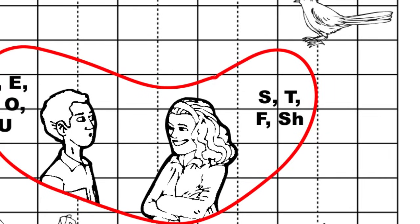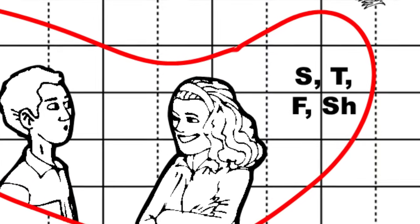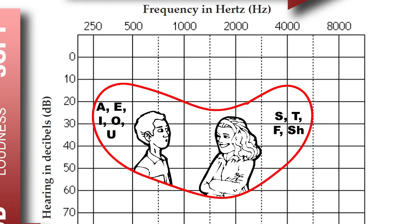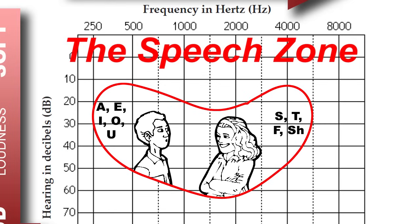Oftentimes these higher frequencies are also associated with women's voices. This section of the audiogram is commonly referred to as the speech zone because most human voices reside within this range of frequency and volume. Now that we know what the various parts of the audiogram are, let's take a look at a few examples.